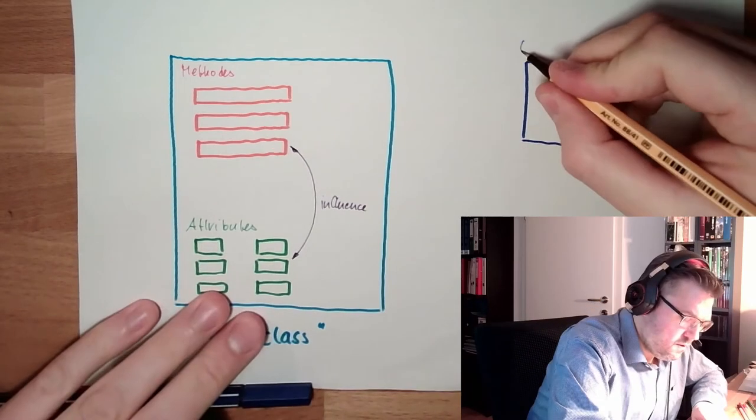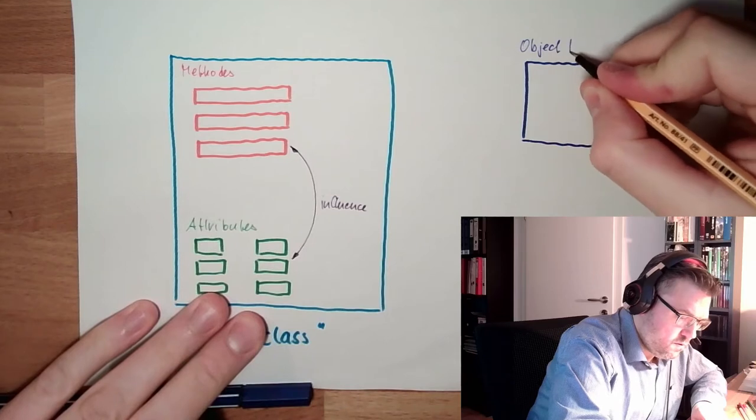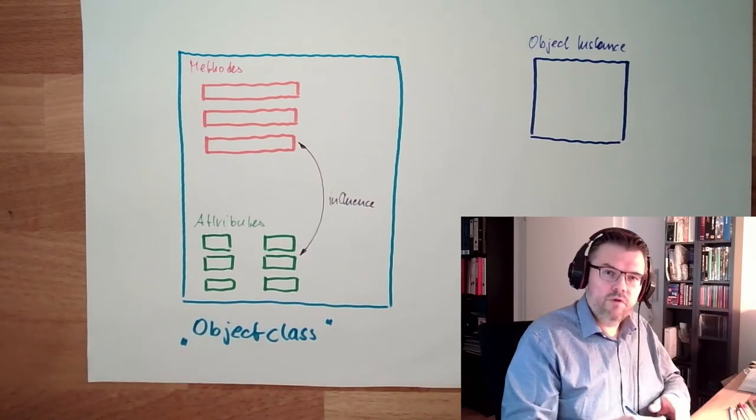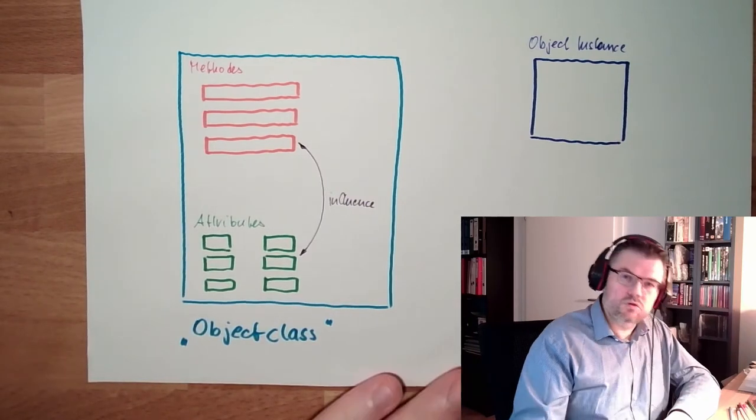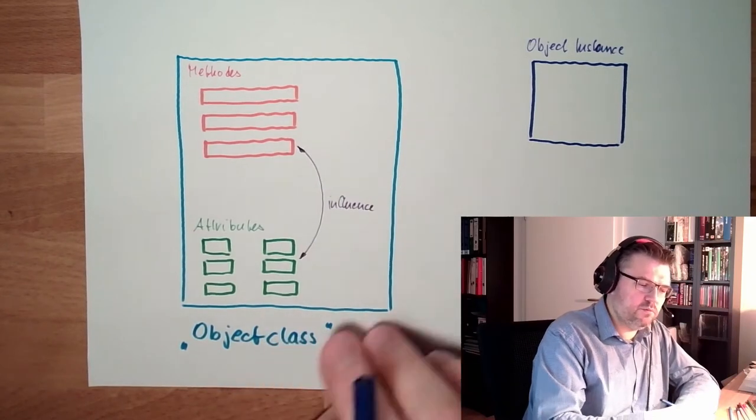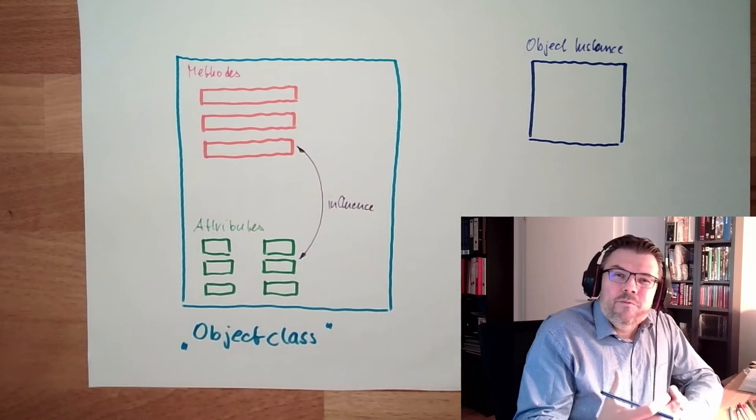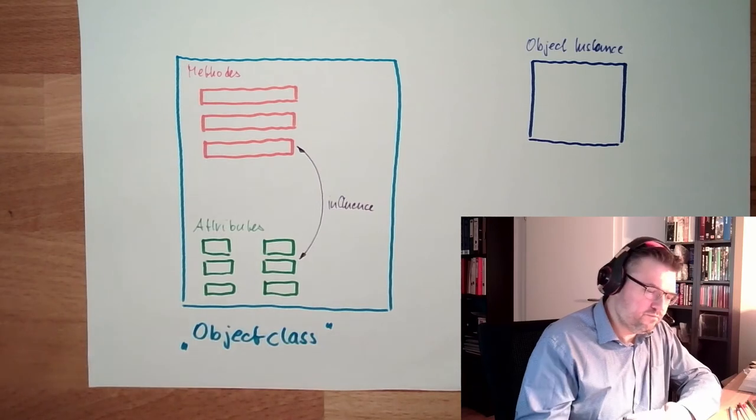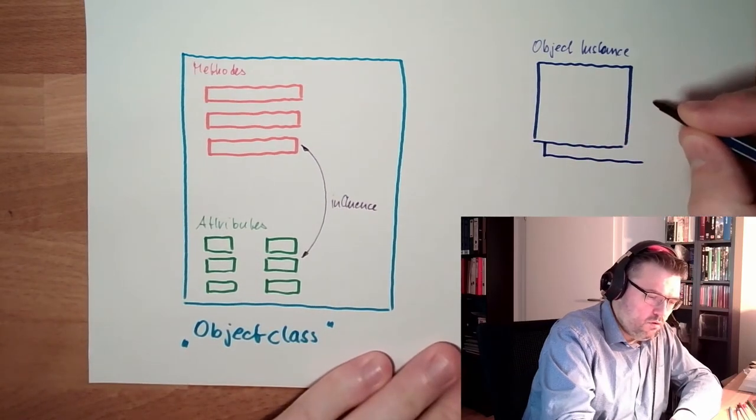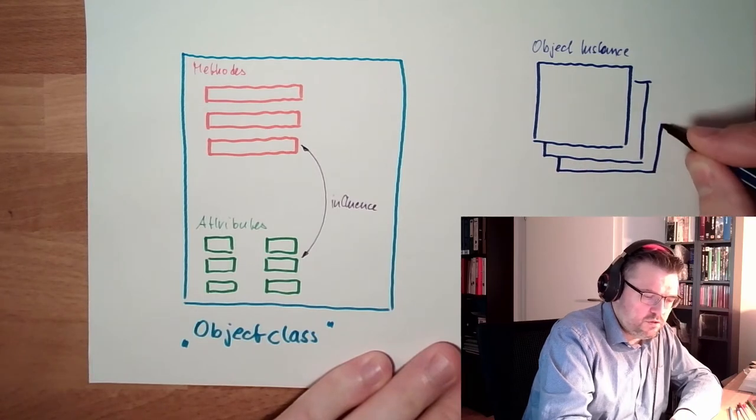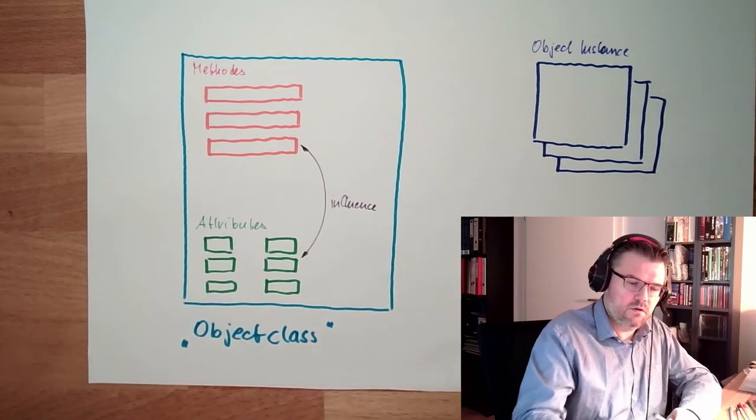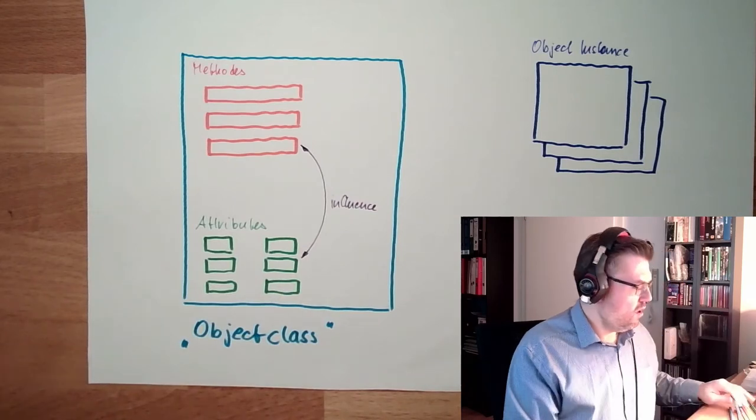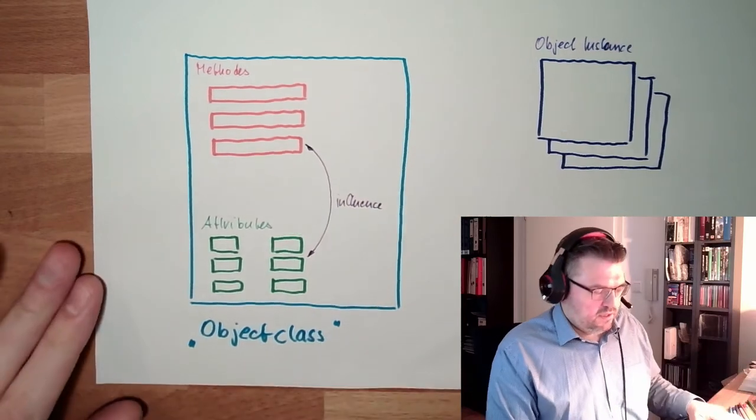So this is an object, and this object instance is now really present in the memory of our system. When I create the object of a certain object class, it's there. When we use a variable with a certain type, it's there. Just a type doesn't make anything. So there might be one or more object instances of the same object class. Why not? I do not have to have only one box. I have several boxes.